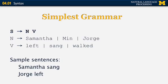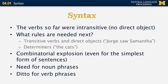So far we only had intransitive verbs — verbs without direct objects. One rule we want to add is to allow transitive verbs, such as Jorge saw Samantha, where Samantha is the direct object. We also want to include determiners, like the cats. If you add all possible combinations of constituents, you end up with a severe combinatorial explosion — too many rules producing too many sentences, many of which are not even correct in English.